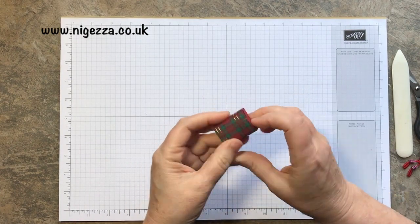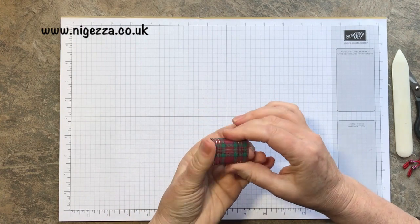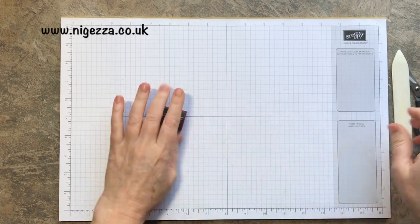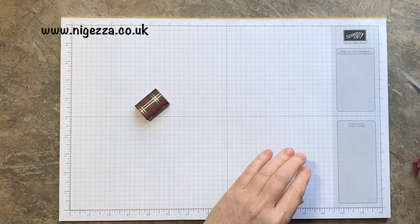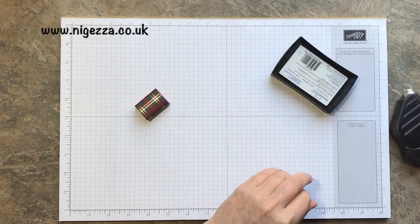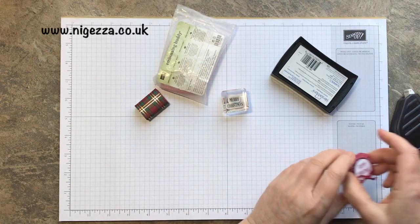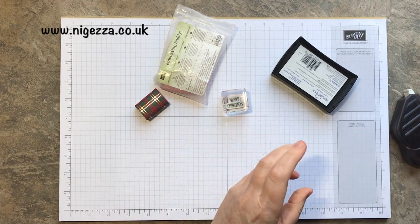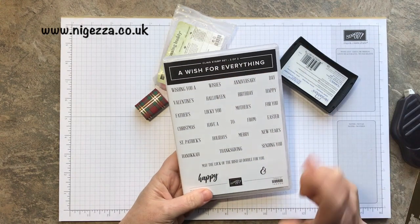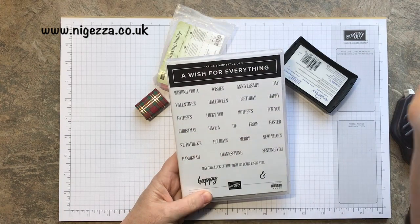That's nicely done - it slips in and out nicely. Now we need to decorate the top. I'm going to do some heat embossing with Merry Christmas. This is from A Wish for Everything stamp set. I've used the Merry and the Christmas from there.